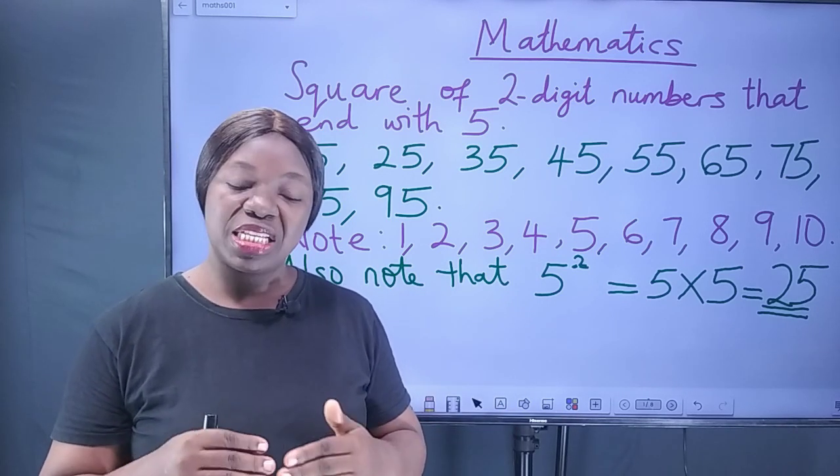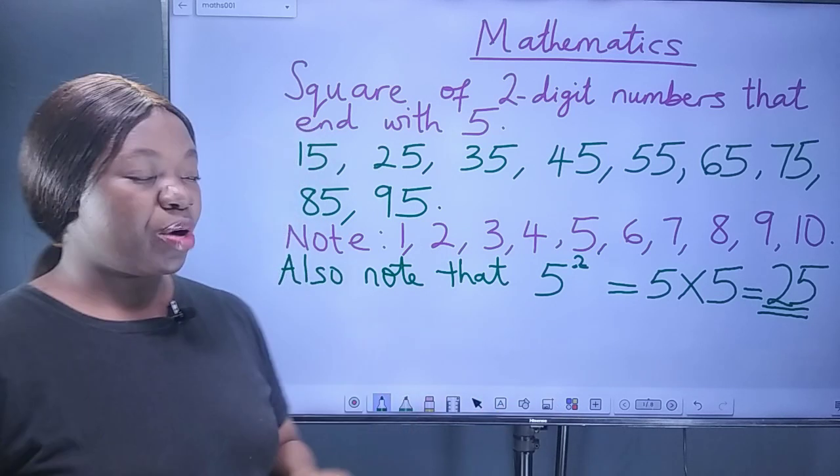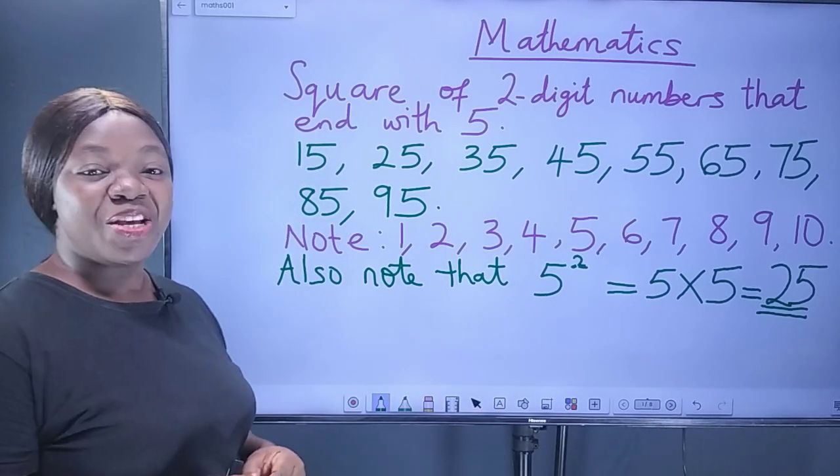So, what is the square of 15? It means 15 times 15. So, we're using a simple trick to find the square of 2-digit numbers that end with 5.